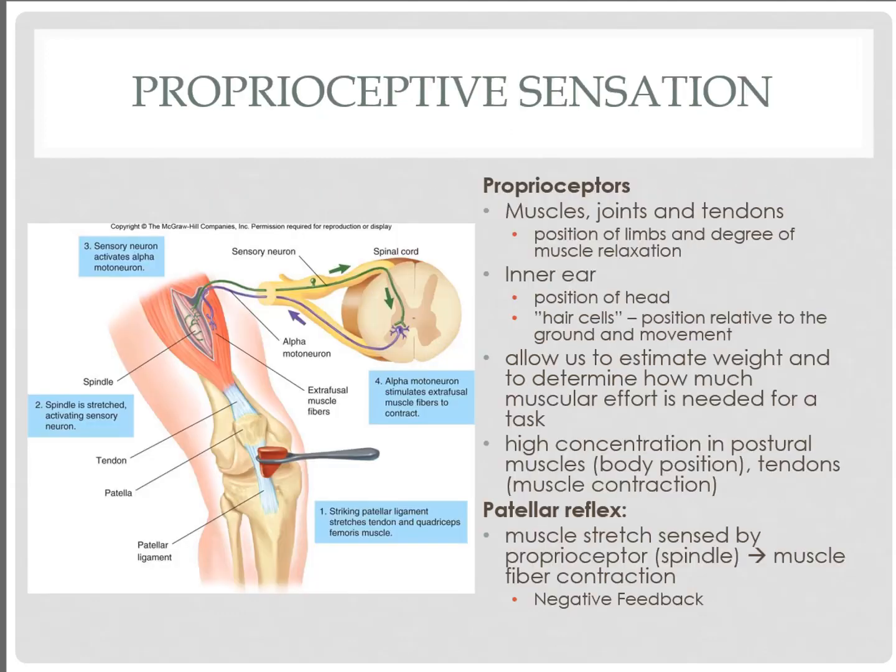Proprioception is information about our muscles, joints, and tendons, as well as sensory information from the inner ear, telling us our position. The proprioceptors in muscle, joints, and tendons tell us about the position of the limbs and amount of muscle tension. Those in the inner ear — described at the end of this lecture — tell us the position of our head in relation to gravity. We have hair cells that determine our position and the amount of movement, differentiating whether we're standing still, moving left, right, up, or down.